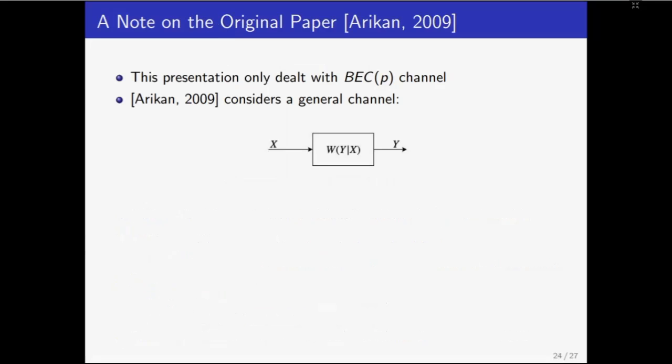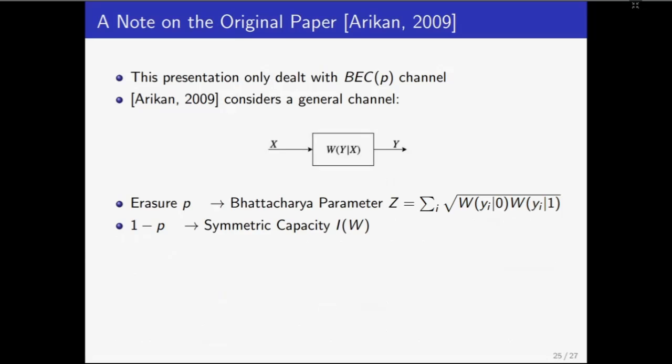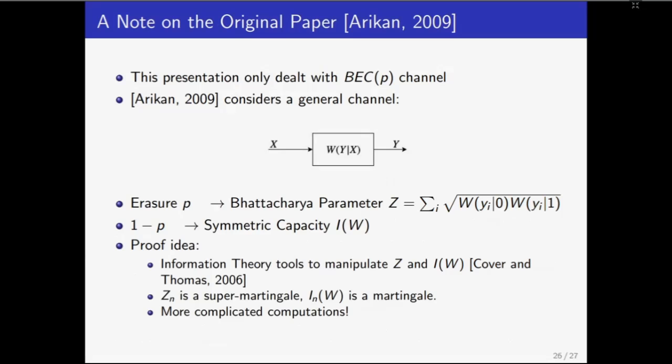We will end with one final note on the original paper. For the sake of simplicity, here we have only dealt with the binary erasure channel. If you were to see Arikan's paper, he deals with a general discrete channel with a general conditional distribution W. This general model requires us to manipulate some more sophisticated quantities. To be very brief, a generalization of the erasure p called the Bhattacharya parameter is used, and also the fraction of noiseless channels obtained 1 minus p generalizes to what is called symmetric capacity. However, the proof idea remains very similar. You will show that Zn is a supermartingale and that In is a martingale. Of course, the computations will be much more complicated. With that, we end this presentation which illustrated a very interesting and useful application of martingale theory. Here are our references and thank you for listening.